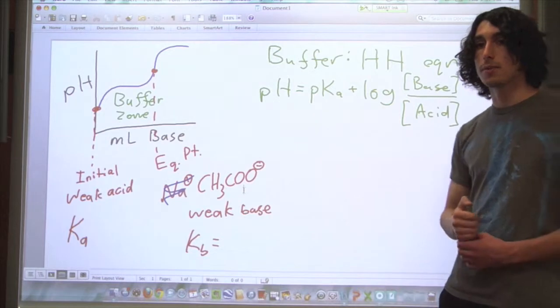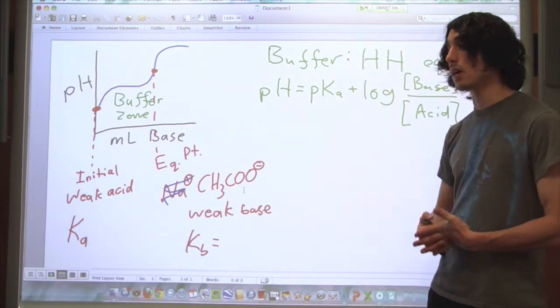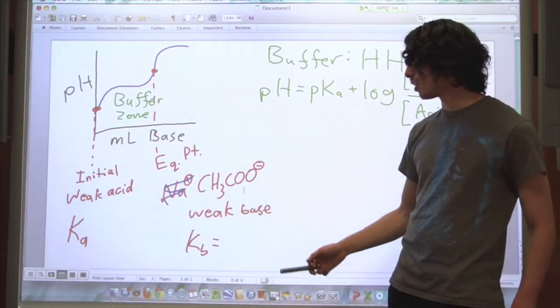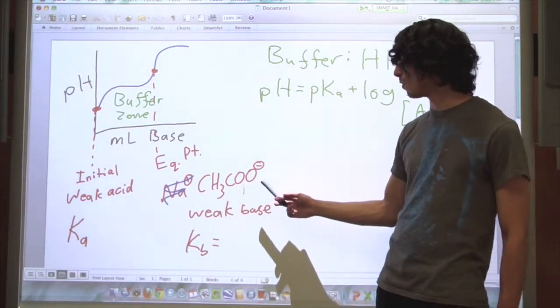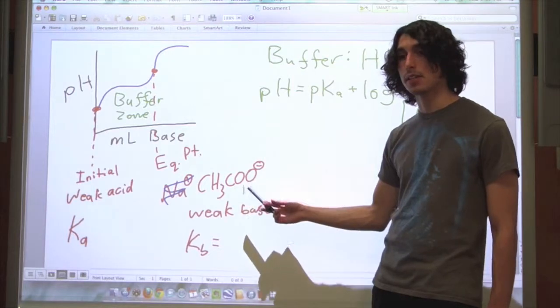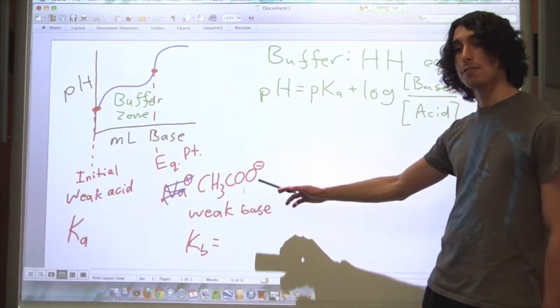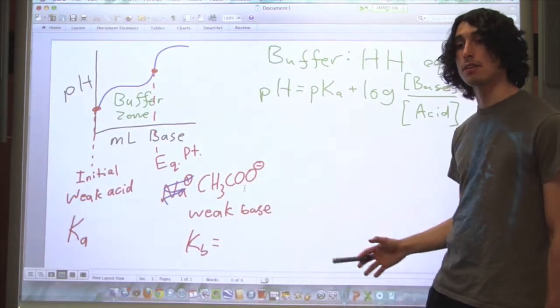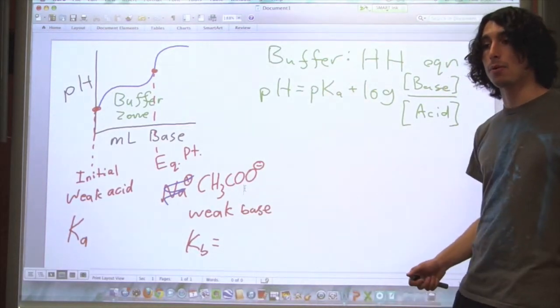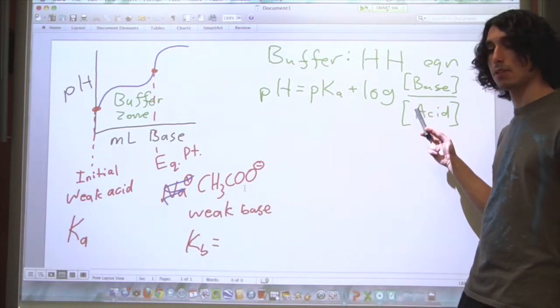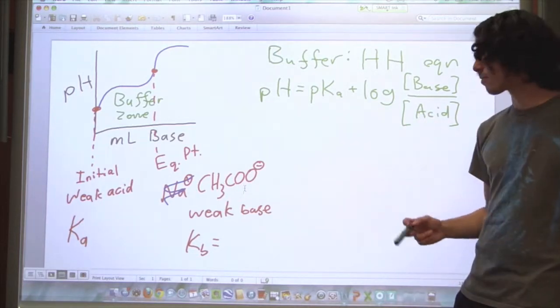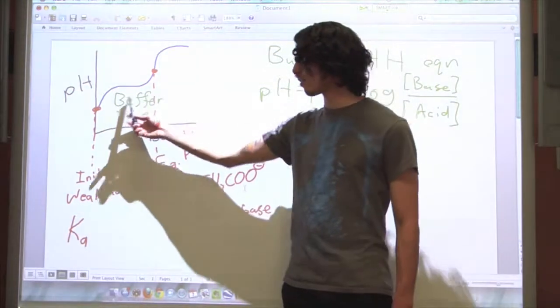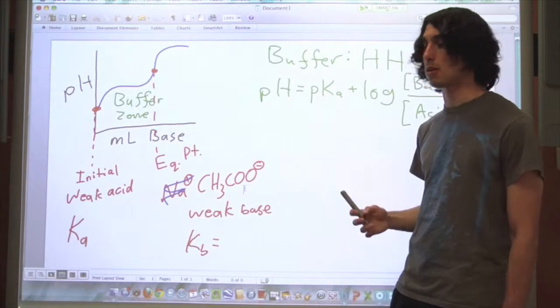So how do you know what these concentrations are? Well, how much base did you add? If you add half a mole of sodium hydroxide to one mole of acetic acid, then that half a mole is going to react completely to form half a mole of acetate ions, leaving behind half a mole of acetic acid. So you can solve anything in the buffer zone using the Henderson-Hasselbalch equation.